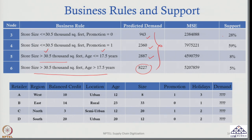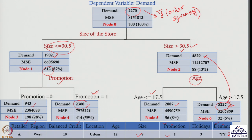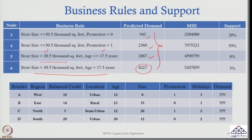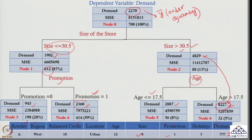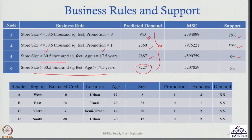I also have the support for each prediction. Support means how many observations you have in each node. Node 3 has 28% support, node 4 has 59% support, node 5 has 8% support, and node 6 has 5% support. If support is high — specifically for node 3 and node 4 — my prediction will have more accuracy. That is what this support tells us.